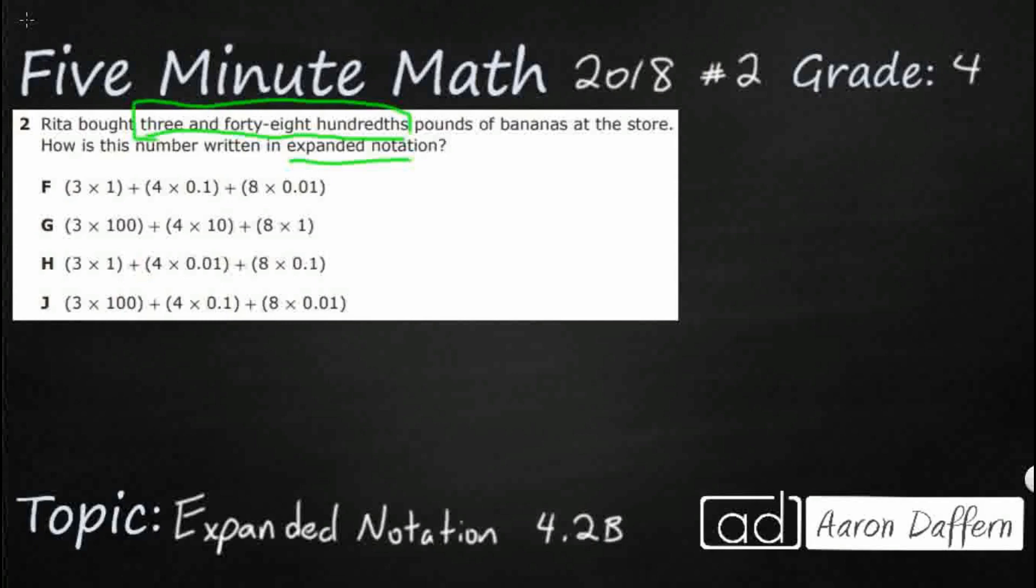So three and forty-eight hundredths. Let's build a place value chart based on what we have right there. Remember when we are speaking or writing our decimals, this word 'and' becomes extremely important. That kind of anchors it because 'and' is used to express the decimal.